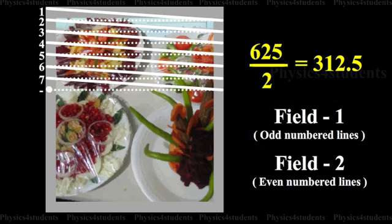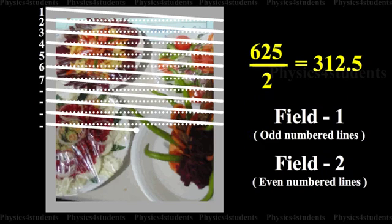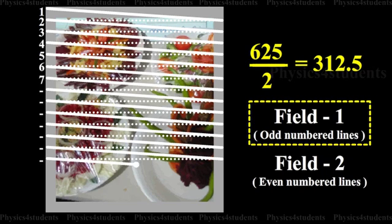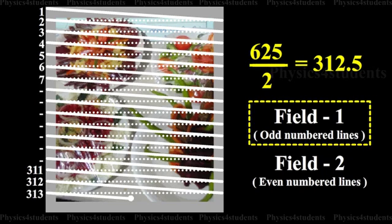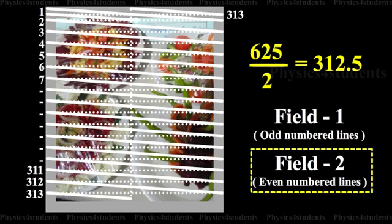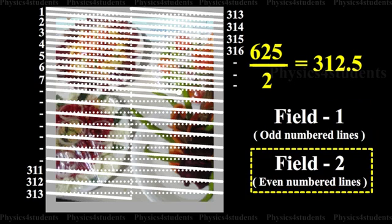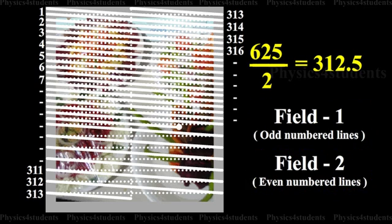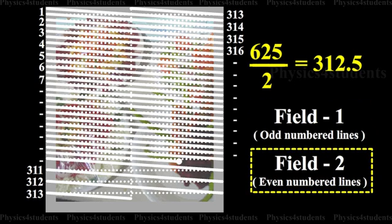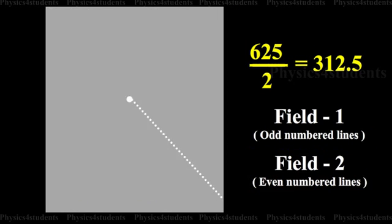Halfway along the bottom of the first field, the vertical retrace returns the scanning beam to the top of the image and completes the unfinished lines. That is, the remaining even numbered lines are then scanned during the second field.